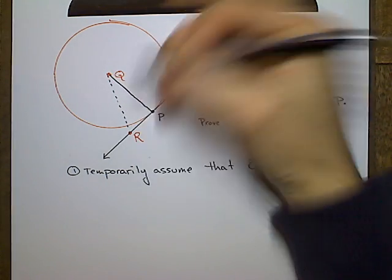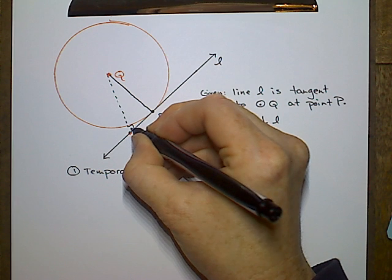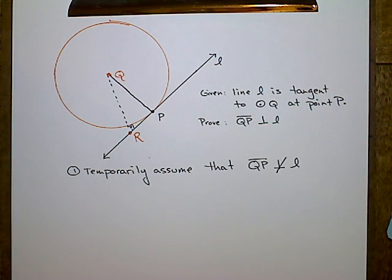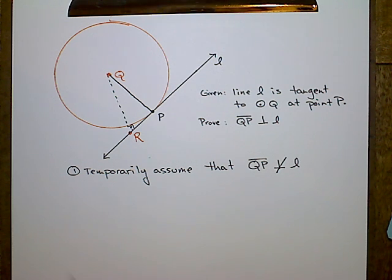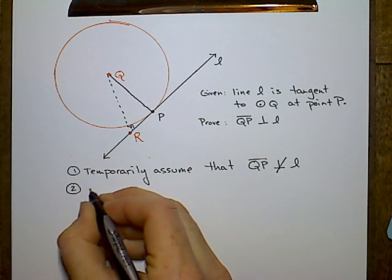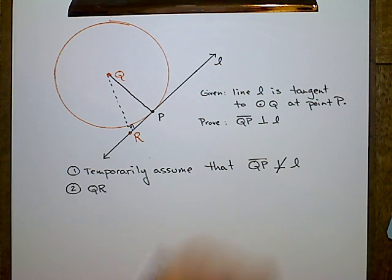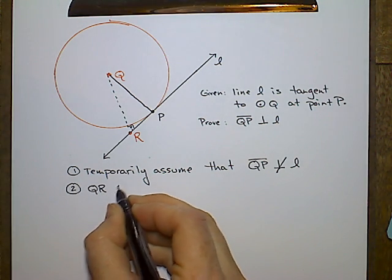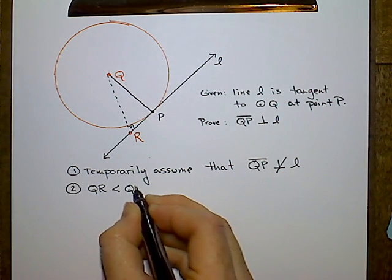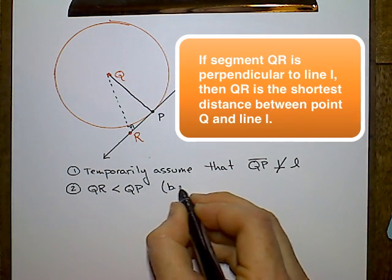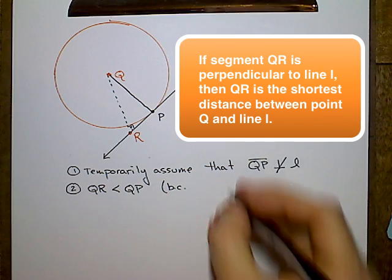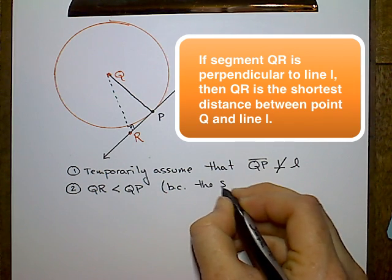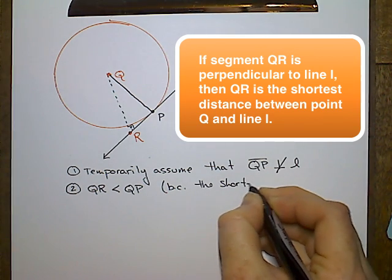It's always the line segment that's perpendicular to that line that passes through that point. So that's going to be key here. If QP is not perpendicular, then there must be some point R where segment QR is perpendicular to the line, and QR must be the shortest distance between point Q and the line. So QR must be less than QP.